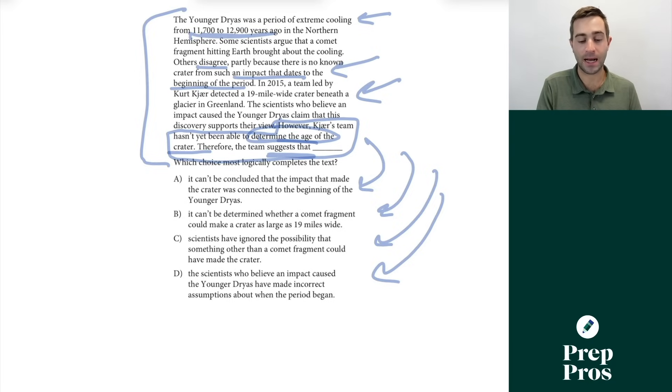And that's exactly what A is saying. It can't be concluded that the impact that made the crater was connected to the beginning of the Younger Dryas because we don't know the age of the impact. Now if we look at B, it can't be determined whether a comet fragment could make a crater as large as 19 miles wide. This could be true, but this has nothing to do with what's in the passage, and we're really restating the ideas in the passage for our completes the text questions here. It's not about whether a certain thing could create something so large. It's about understanding whether it occurred at the right time or not.